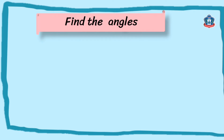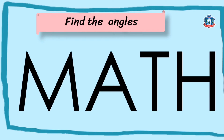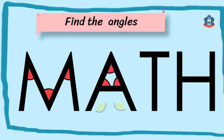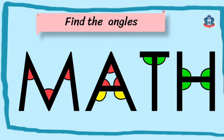I have here the word MATH. Let's find the angles in each letter. Let's start with letter M — we have acute angles. How about letter A? Letter A consists of acute angles and obtuse angles. How about letter T? It has 2 right angles. And how about letter H? There are 4 right angles.